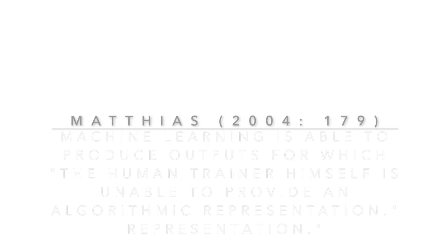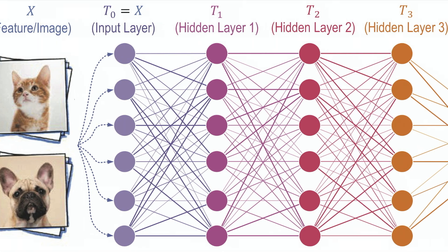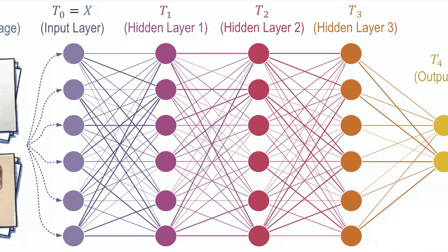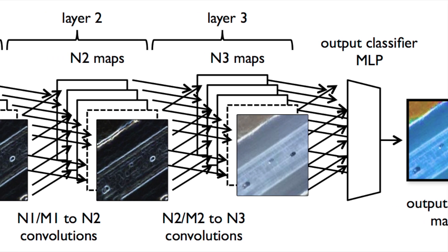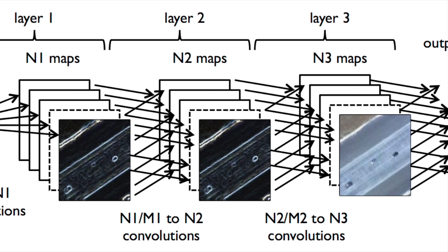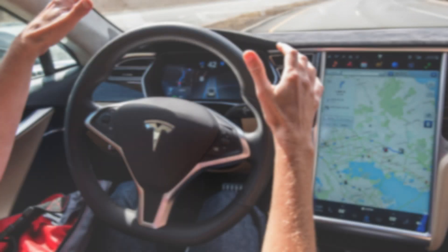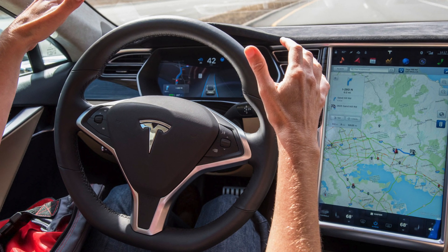Machine learning is often employed when humans are not able to find algorithmic representations of the problem. A standout example is how deep learning outperformed any handcrafted method for image recognition tasks. Deep neural networks accomplish the job in a way that humans cannot describe in logical terms; we can only understand it from a high-level perspective. Our limitations in understanding algorithms' rationale make it difficult to employ machine learning in situations where the consequences of possible failures are critical.